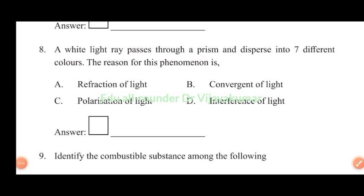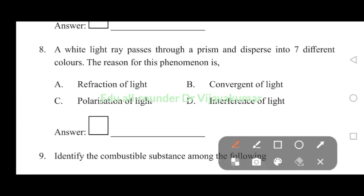A white light ray passes through a prism and disperses into seven different colors. The reason for this phenomenon is refraction of light. Answer A is the correct. Refraction of light.